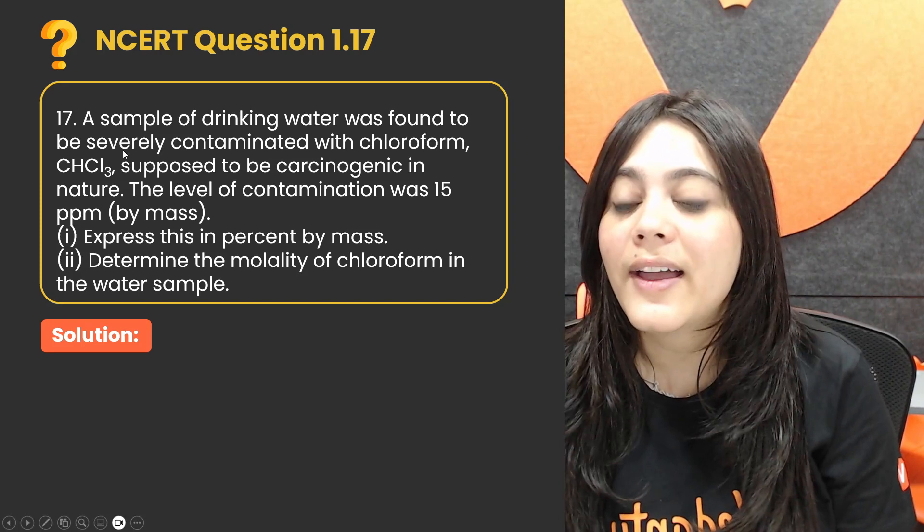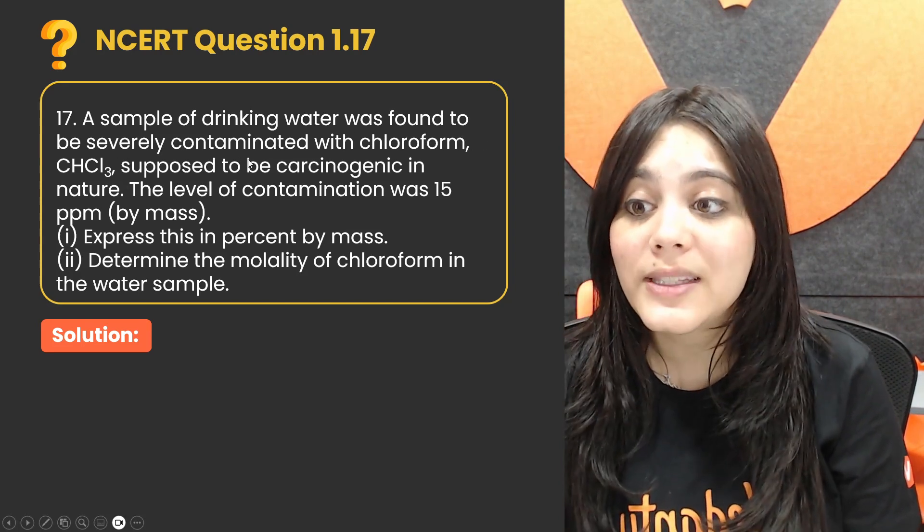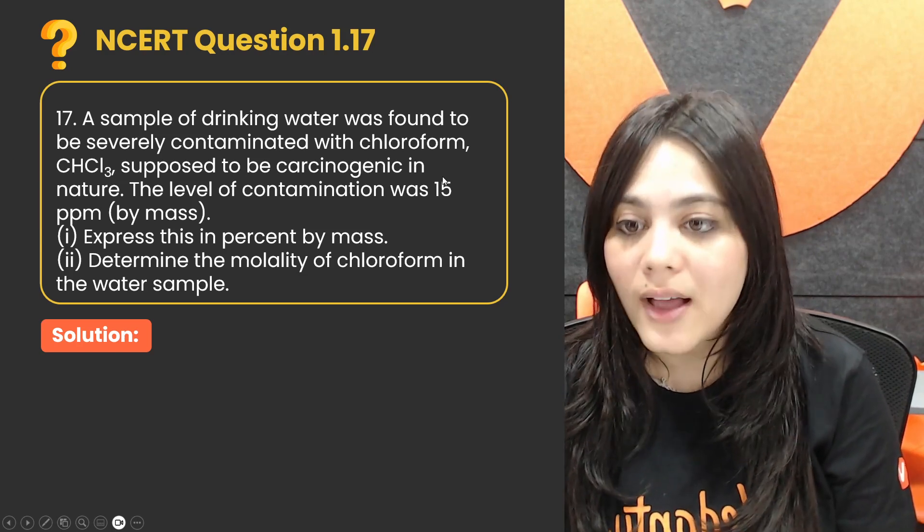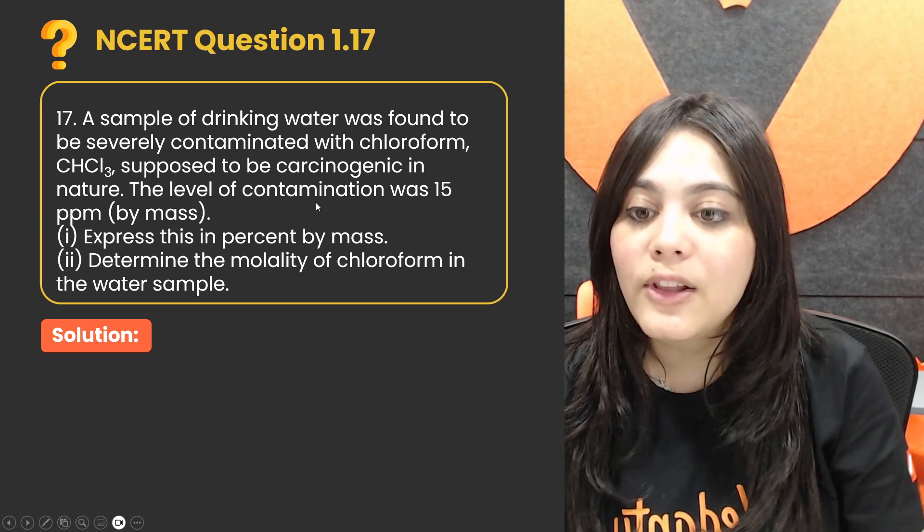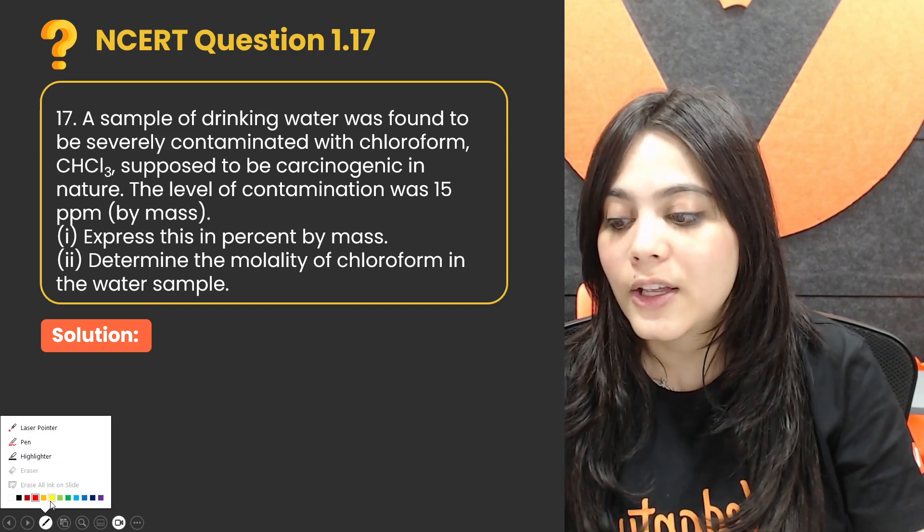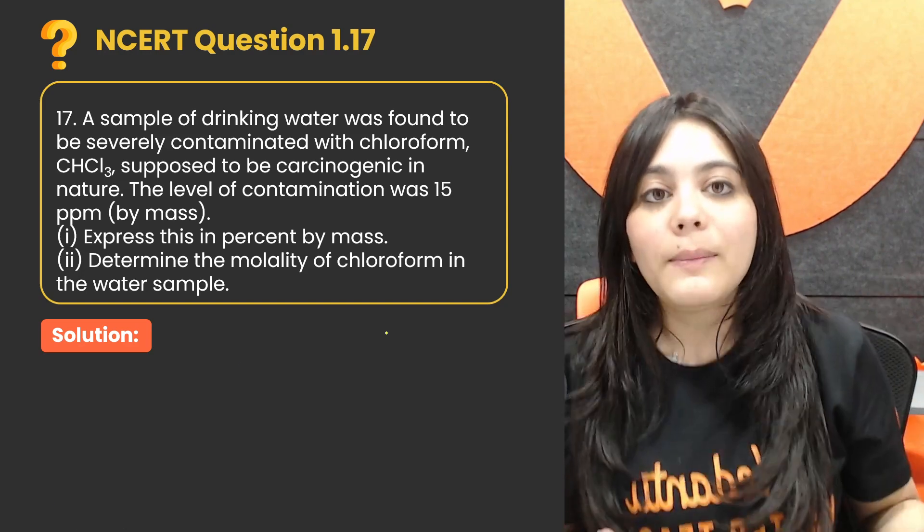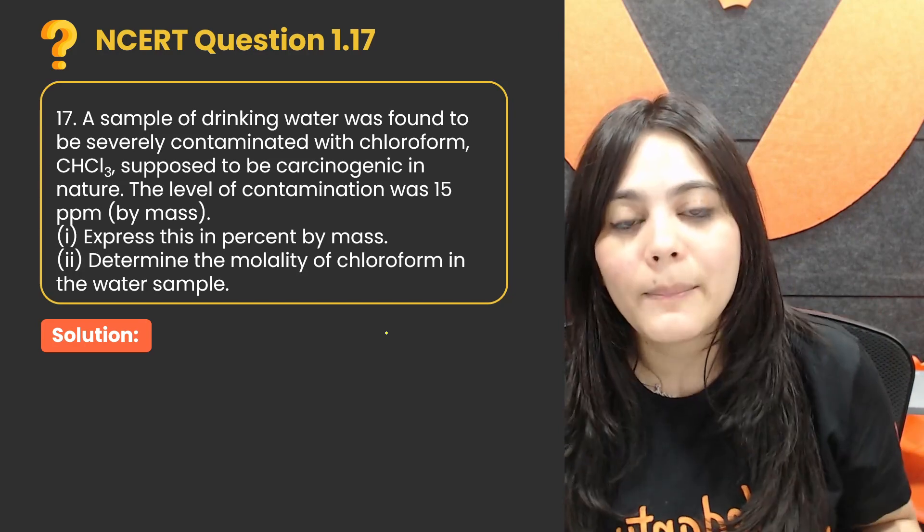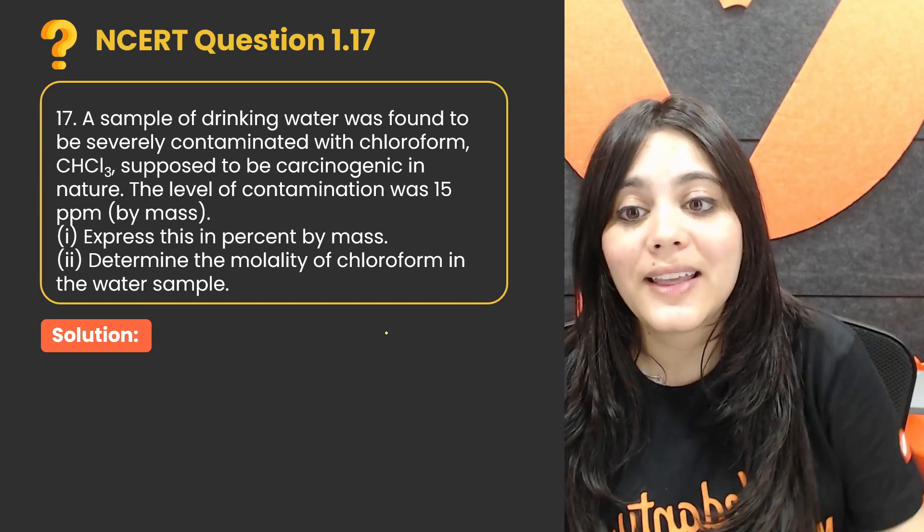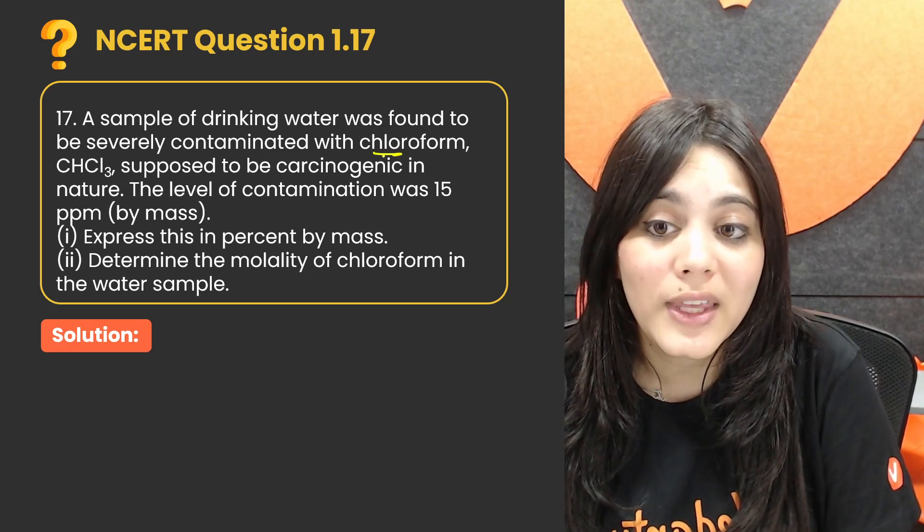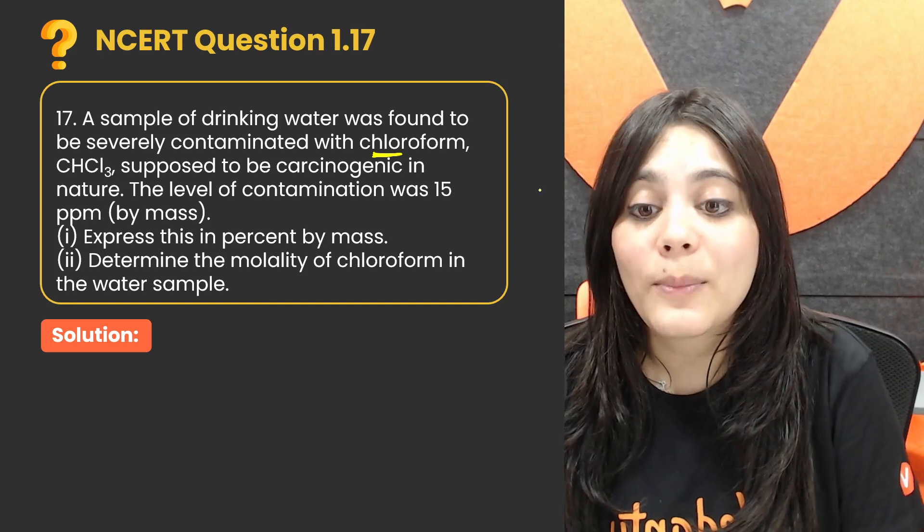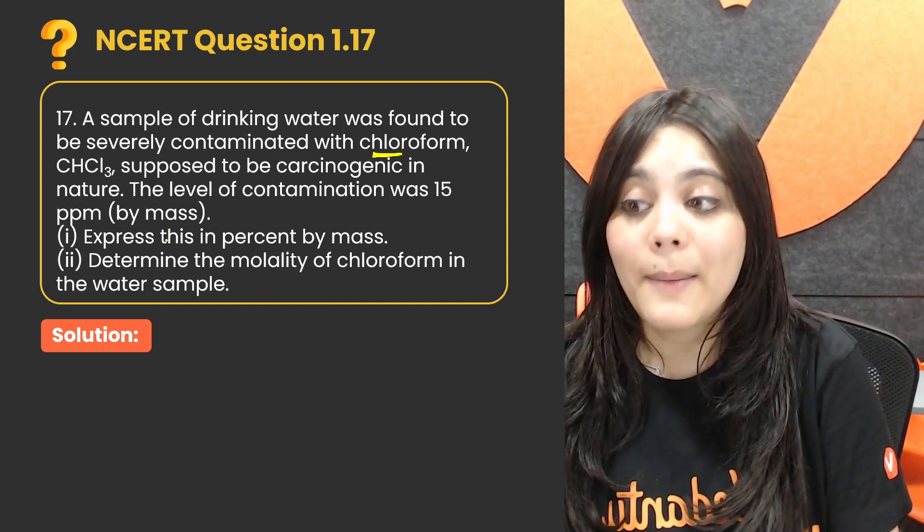This question is saying a sample of drinking water was found to be severely contaminated with chloroform, supposed to be carcinogenic in nature. The level of contamination was 15 ppm by mass. So what does this mean? You have a drinking water sample contaminated with chloroform, which is carcinogenic, and the level of contamination is 15 ppm by mass.